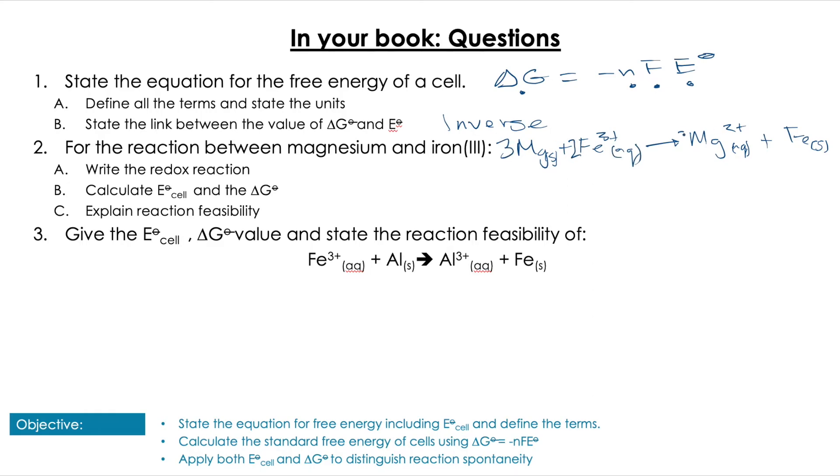Then we're going to calculate the E°cell value and the value of ΔG°. For the E°cell value, we're going to use our equation, which is going to be 0.32 plus 2.37, which is 2.69. Now we're transferring six electrons in this equation, so that is going to give us an answer of -1,557,510 joules.